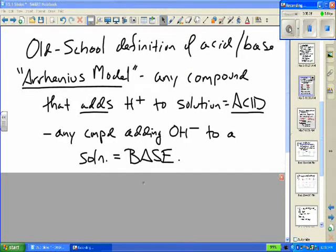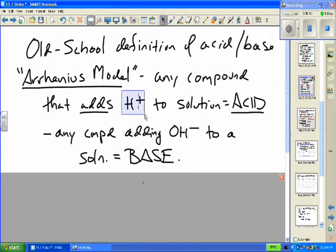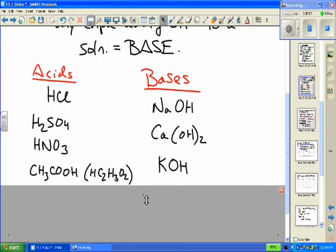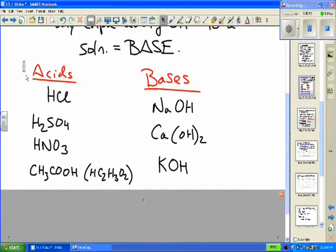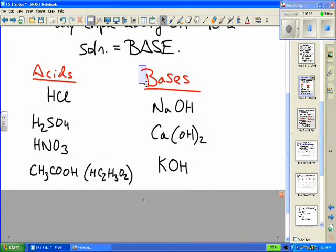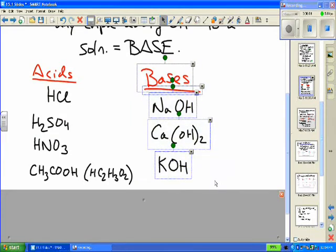Now, the definition of acids and bases that we're used to working with to date is called the Arrhenius model, kind of the old-school definition. And we're used to seeing any compound that adds hydrogen ion to solution as an acid. Any compound that adds OH- to solution is a base. And if we look at some of our familiar acids and bases, you can see that they all have hydrogen ion to donate to solution in the case of acids, or hydroxide ion to donate to solution in the case of bases.